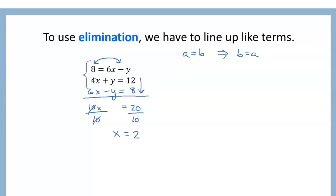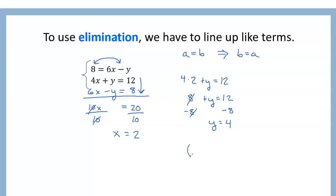We can take that 2 value and put it in either of our original equations. Let's try the second equation: 4 times the x value, which is 2, plus y equals 12. 4 times 2 is 8. We subtract that 8 from both sides and get y equals 4. So our overall answer is 2, 4.